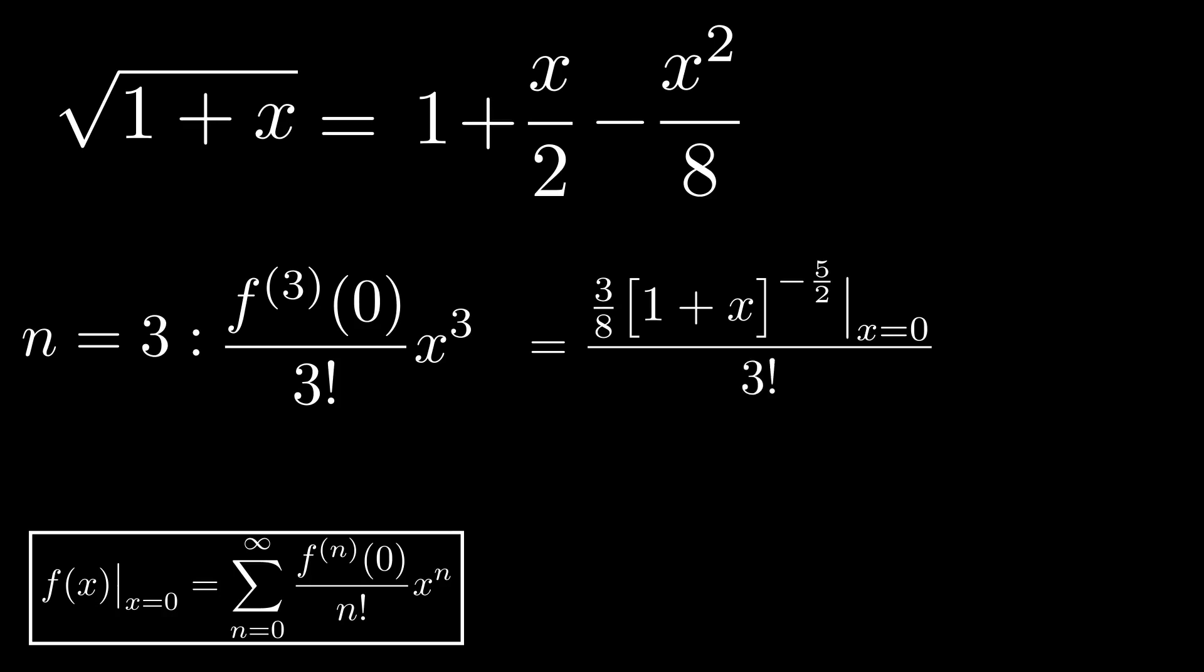In the denominator, we get 3 factorial, and we shouldn't forget to multiply this fraction with x to the power of 3. Filling in x is equal to 0 in the numerator, we get the final term, x cubed divided by 16.